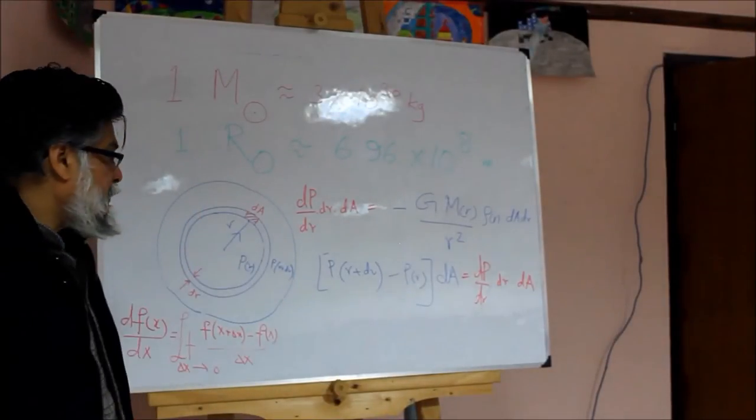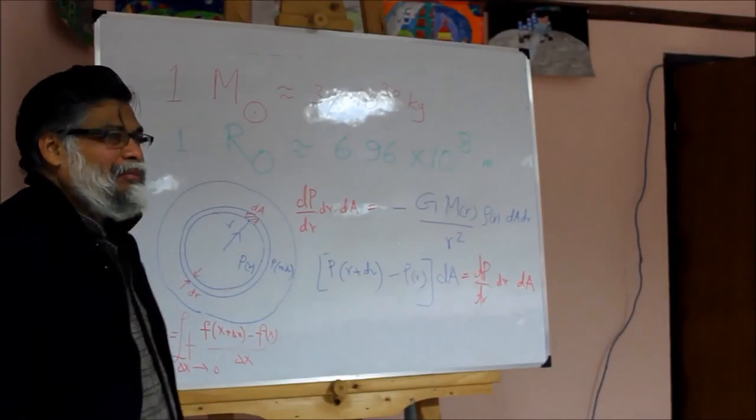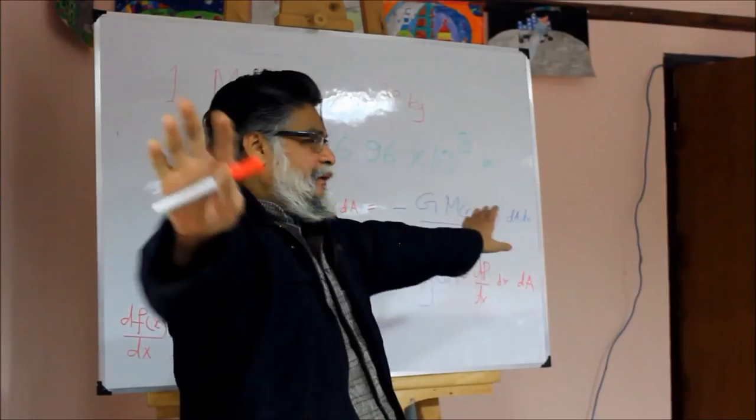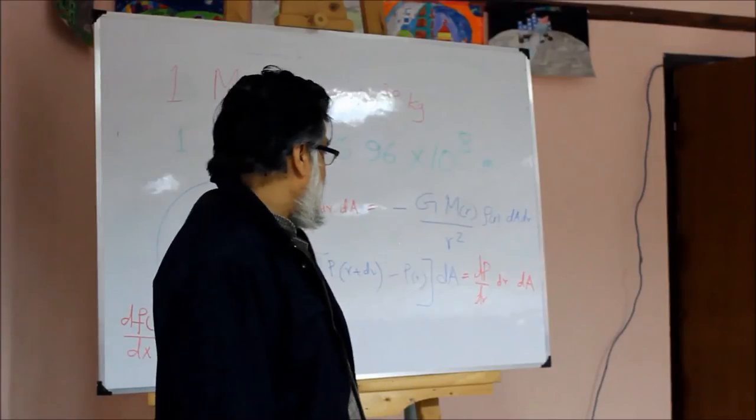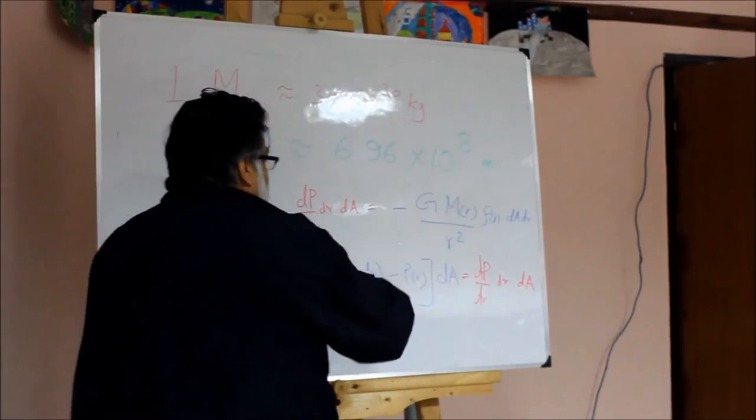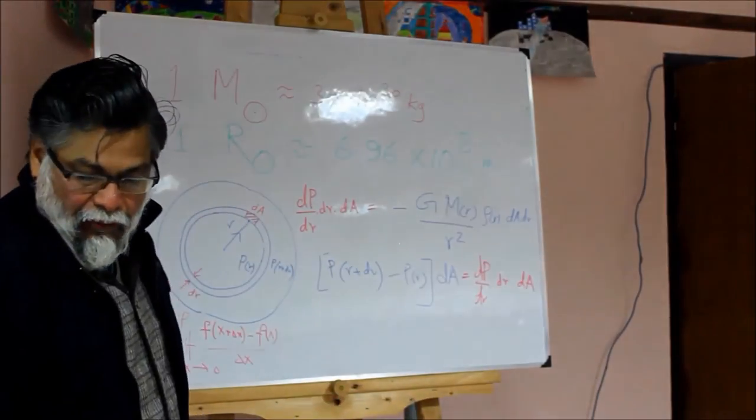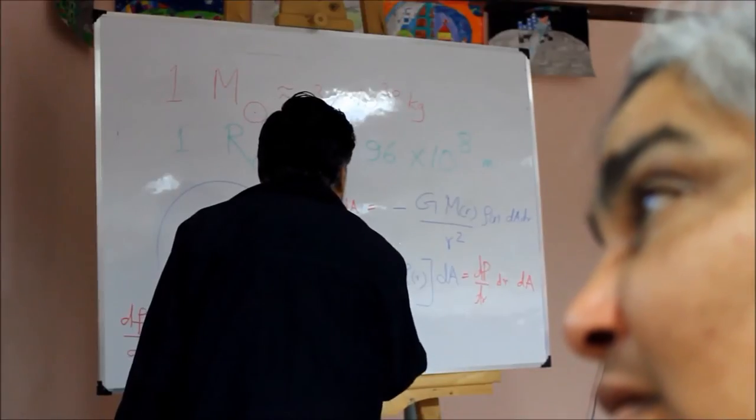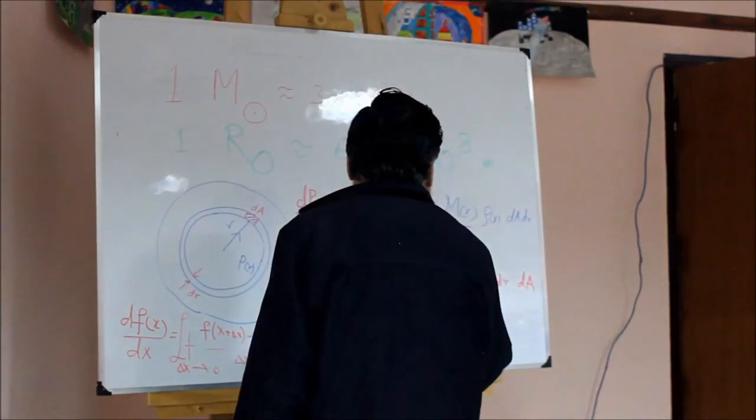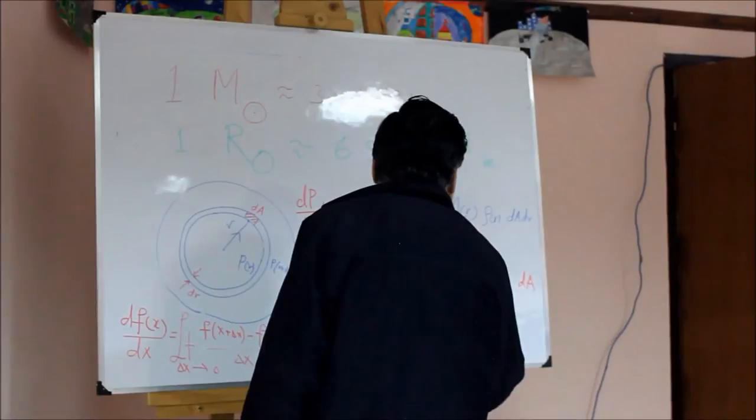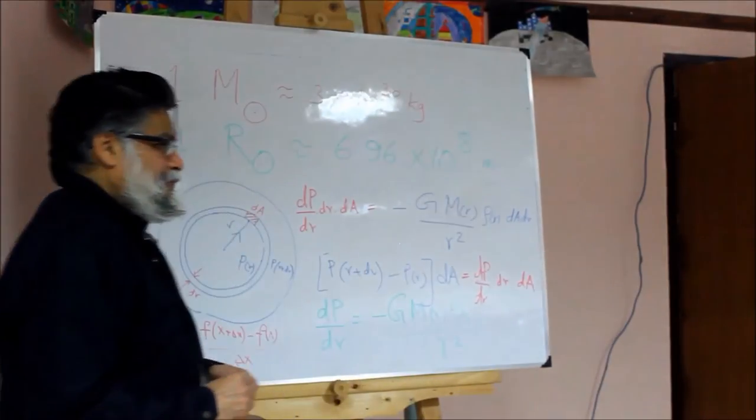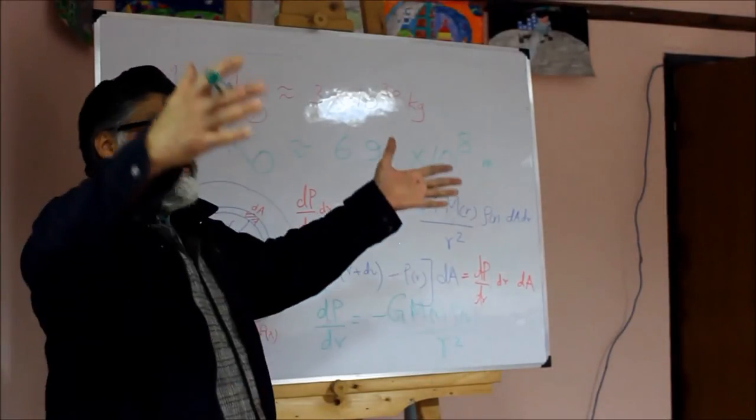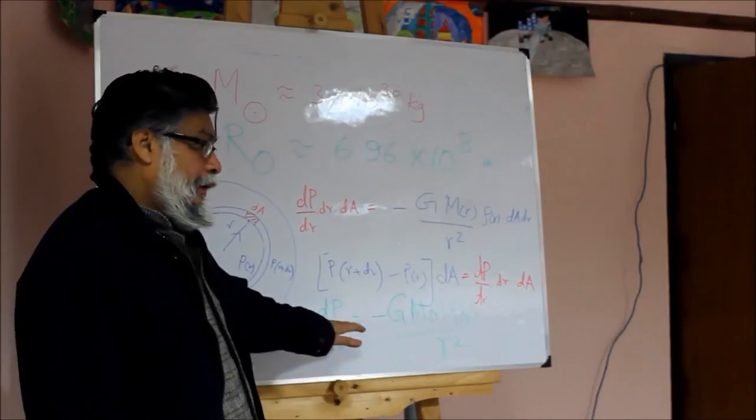The pressure balancing the gravitational attraction is given by this, and the magic happens—that's the power of mathematics. The magic is all the dA and dr get cancelled, and we have now a neat equation. The hydrostatic equilibrium equation: dP/dr will be equal to minus G M(r) rho(r) / r². This is for a spherically symmetric object.